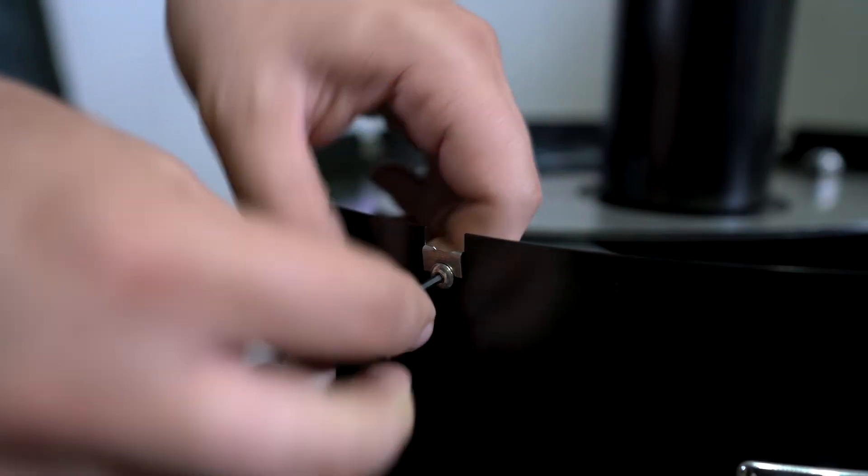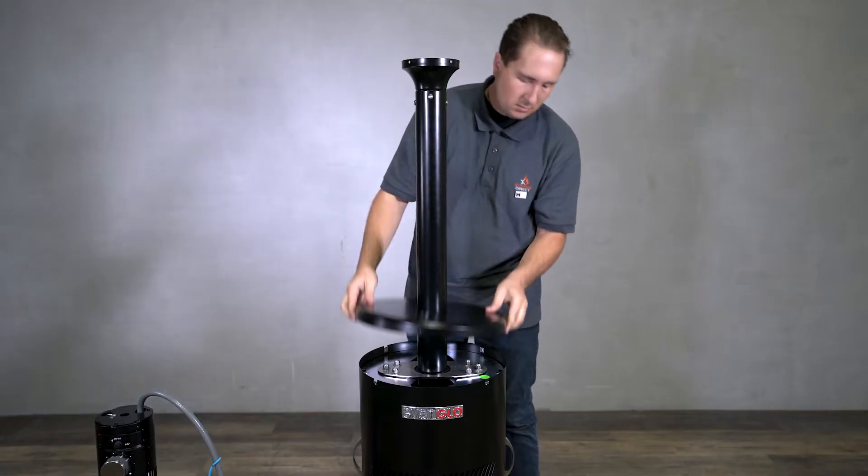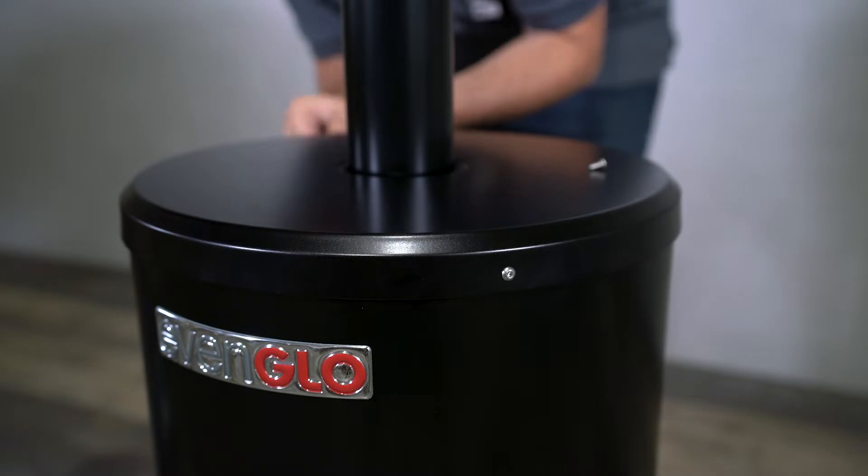Next, we'll remove the screws from the top of the heater base, lower the base lid, and tighten the screws back on, securing the lid in place.